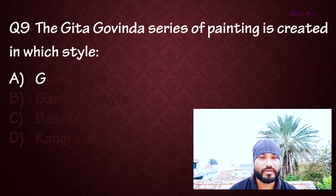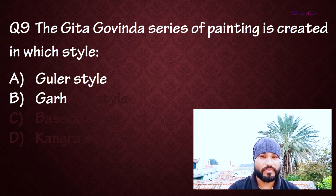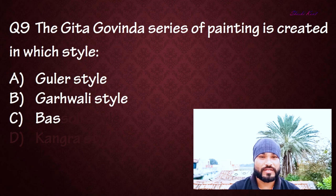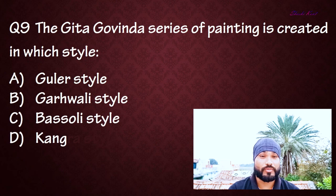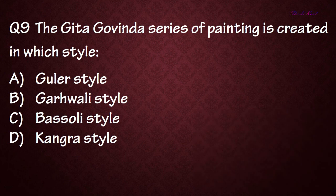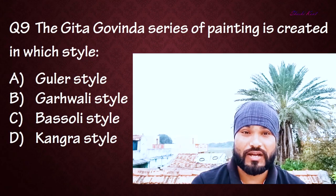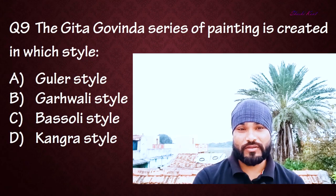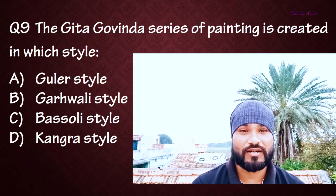Question number nine: The Geet Govinda series of paintings was created in which style? Option A: Guler style, Option B: Garhwal style, Option C: Basoli style, Option D: Kangra style. The right answer is Option D: Kangra style.